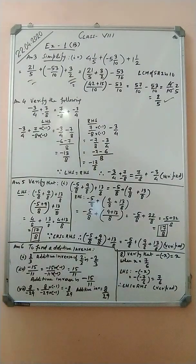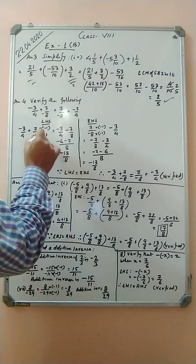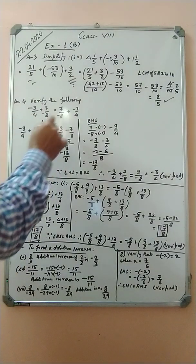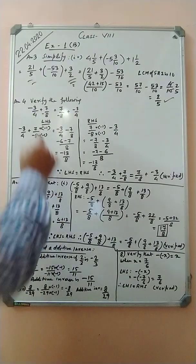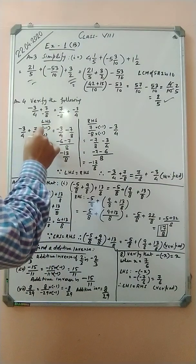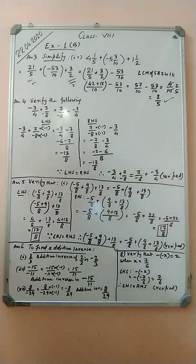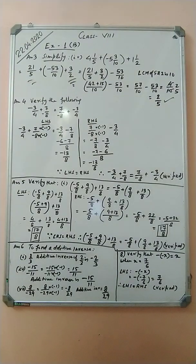The denominator of 7/(minus 8) is negative, so it is not in standard form. We convert by multiplying minus 1 in both numerator and denominator, giving minus 7/8. So LHS becomes minus 3/4 minus 7/8. LCM of 4 and 8 is 8: minus 3 times 2 is minus 6, so we get minus 6 minus 7, which is minus 13/8.